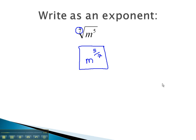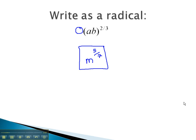We can also convert the other direction. If I were to give you an expression with an exponent, we could change this to a radical expression. The denominator, 3, will become the index on ab. The numerator will still remain as part of the exponent.